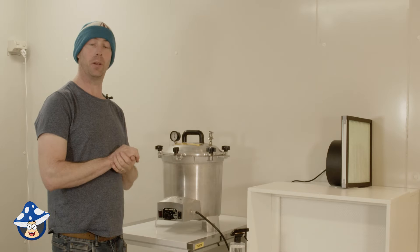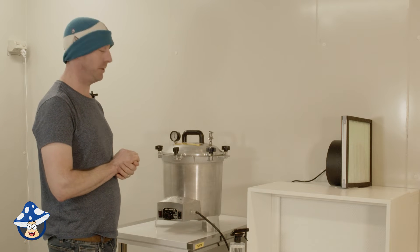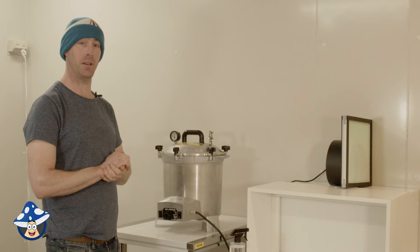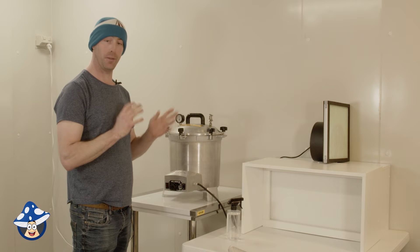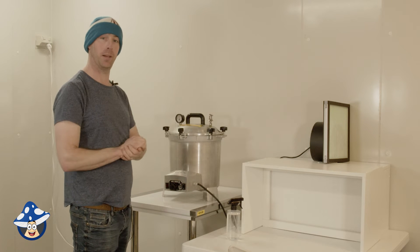So our agar has been cooking at around 17 PSI for 45 minutes. We've just turned it off. We're going to turn our flow hood on so it has time to run for a good half an hour, 45 minutes while the pressure cooker cools down on its own and that will help filter all the air in the room of any spores flying around and make it a bit cleaner while we unload and put it into our sterile airflow.